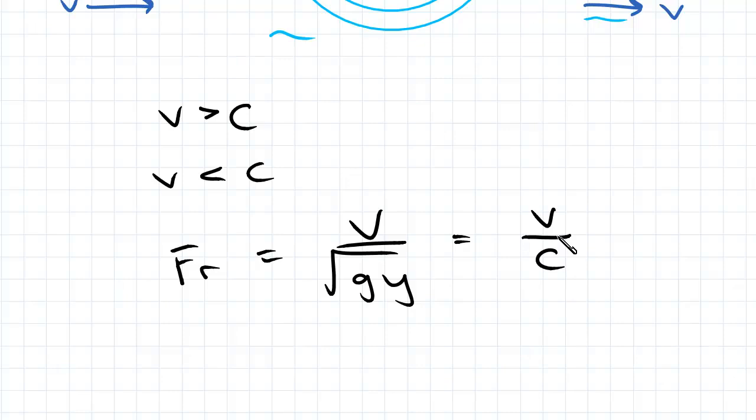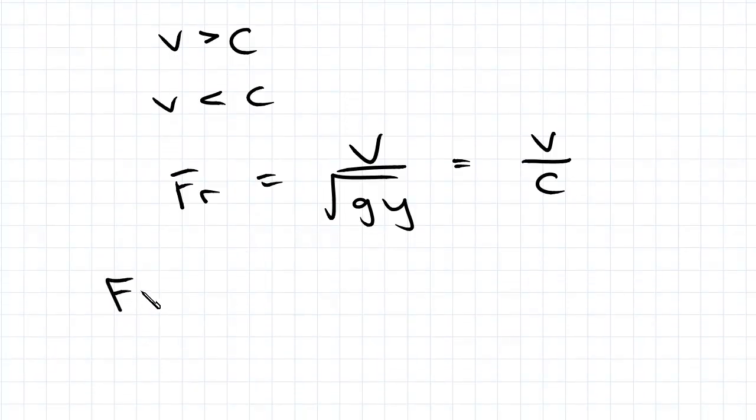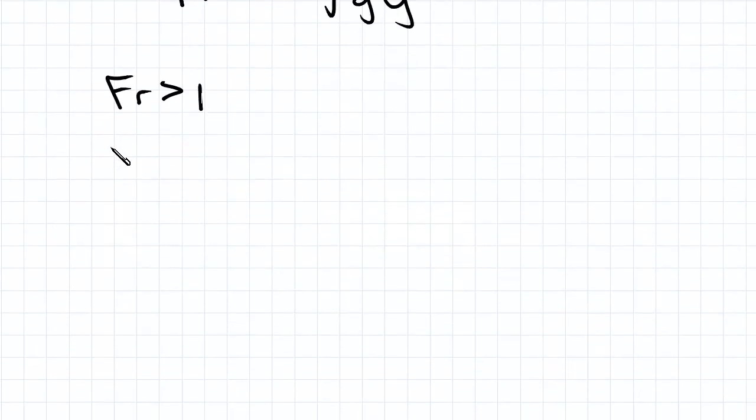Now from before we said if v is greater than c, then the wave would not propagate upstream. In the Froude number equation, if v is greater than c, then Fr is greater than 1. This is what we call a supercritical flow.